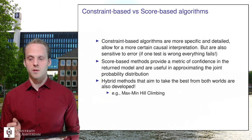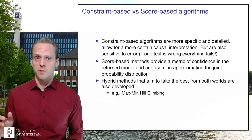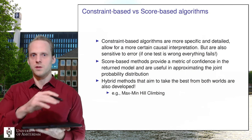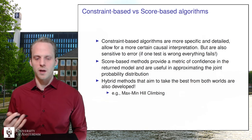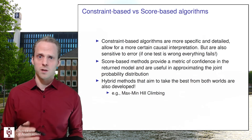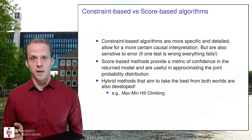So that's constraint-based versus score-based algorithms. Constraint-based algorithms are more specific and detailed and allow for more certain causal interpretation. But with a low sample size, they're more prone to low power because you're doing many small significance tests, whereas the score-based approach just evaluates one overall fit at each step. Which you choose really depends on your data size and how fine-grained a causal interpretation you need. There are also some hybrid methods that try to take the best of both worlds.